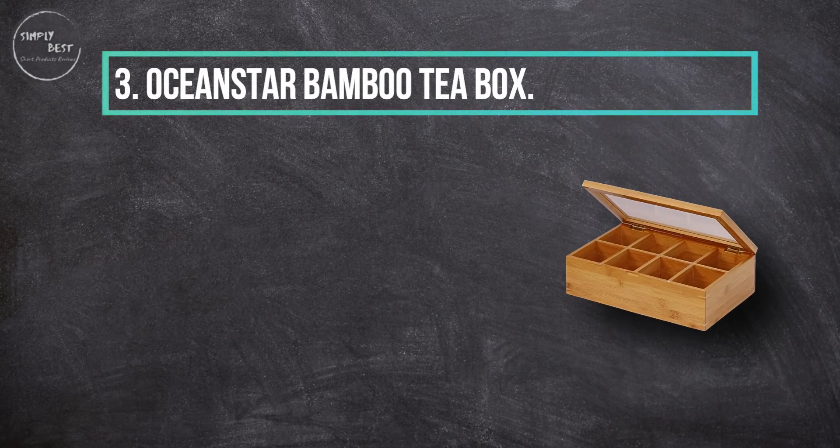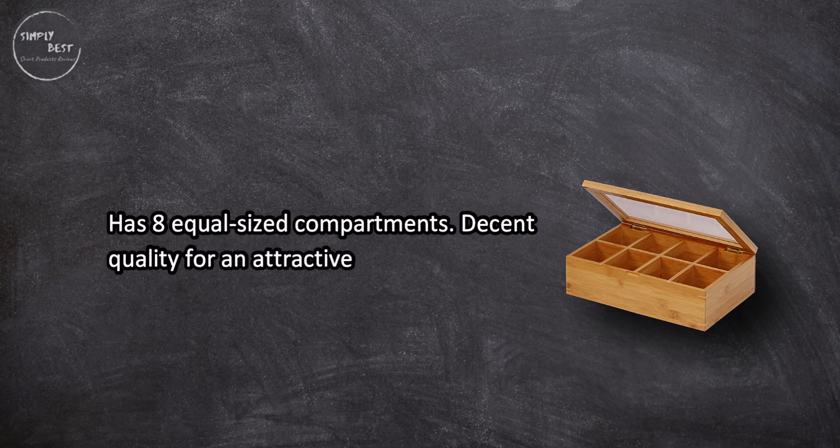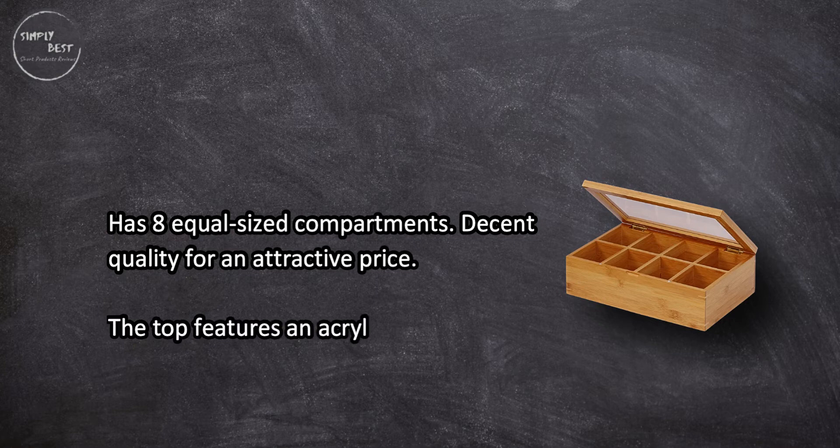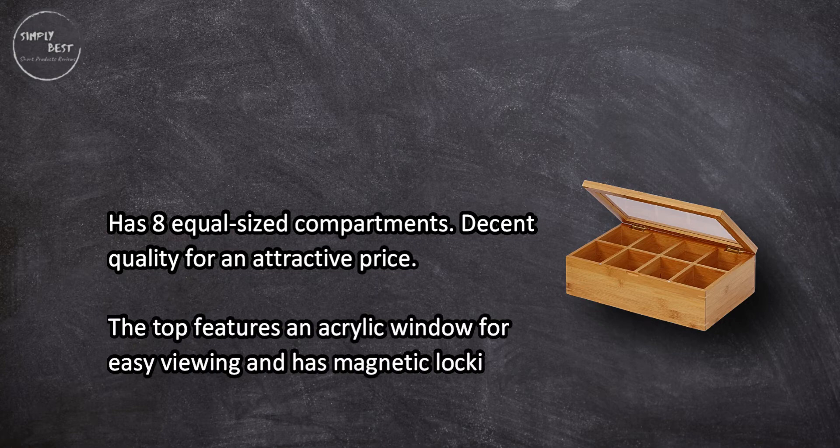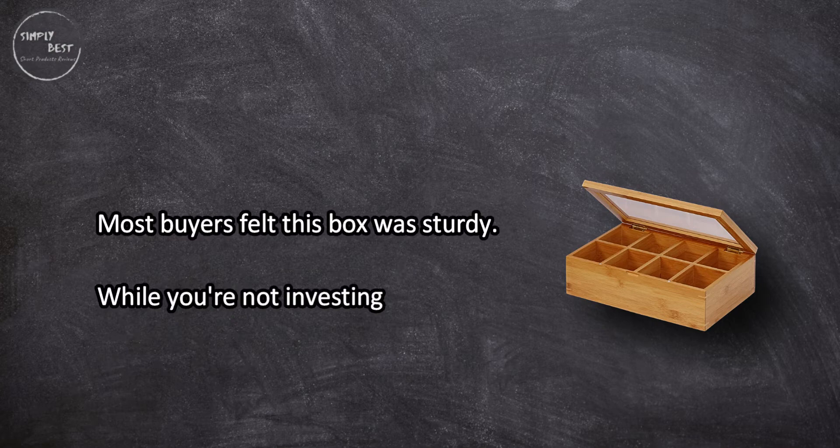At number three, Ocean Star Bamboo Tea Box has eight equal-sized compartments and decent quality for an attractive price. The top features an acrylic window for easy viewing and magnetic locking. Most buyers felt this box was sturdy.